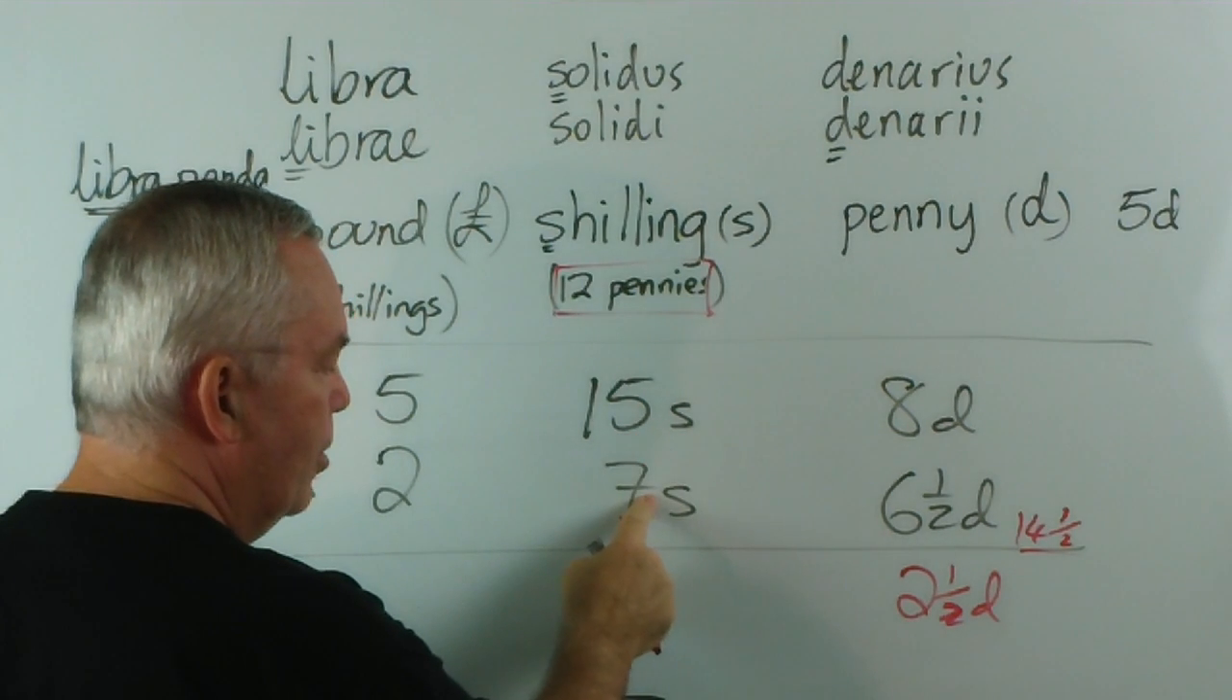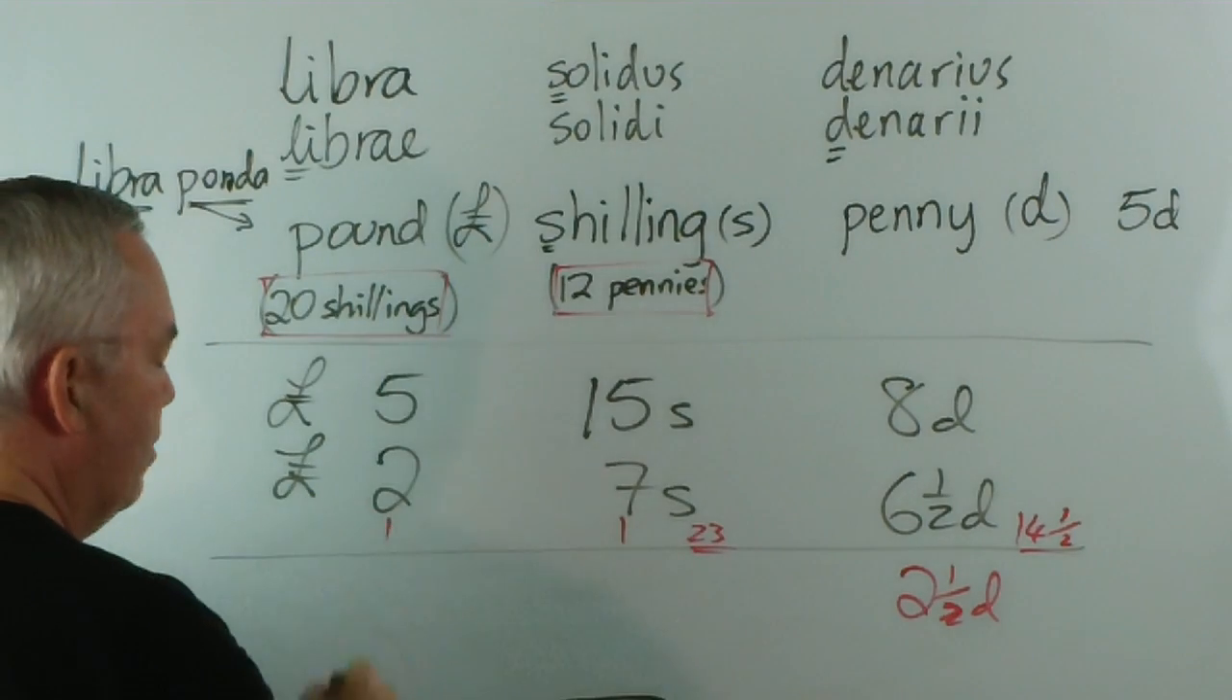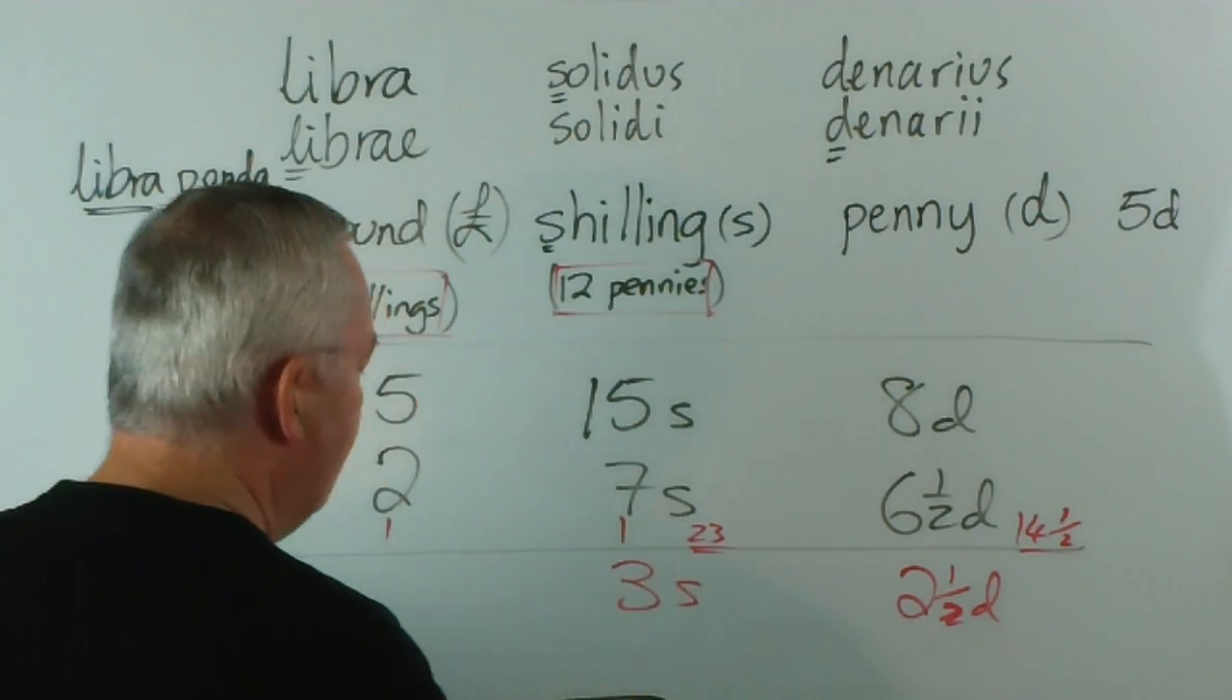These ones, fifteen and seven and one. Fifteen and seven is twenty-two, twenty-three. So we have twenty-three shillings. But twenty shillings make up a pound. So if we take twenty of these over here, we get one pound. Removing those twenty leaves three shillings. And here we're left with five, six, seven, eight, eight pounds.